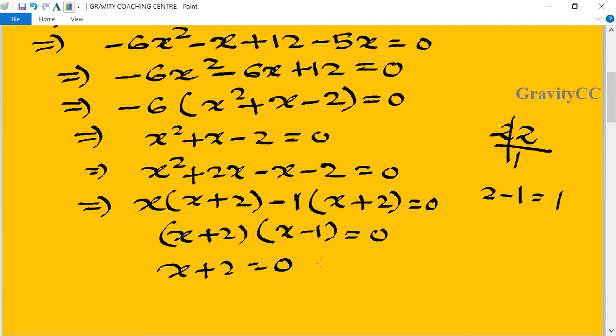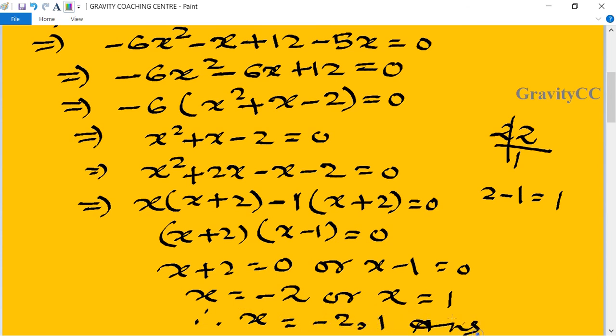Therefore, x + 2 = 0 or x - 1 = 0. This gives x = -2 or x = 1. So the answer is x = -2, 1.